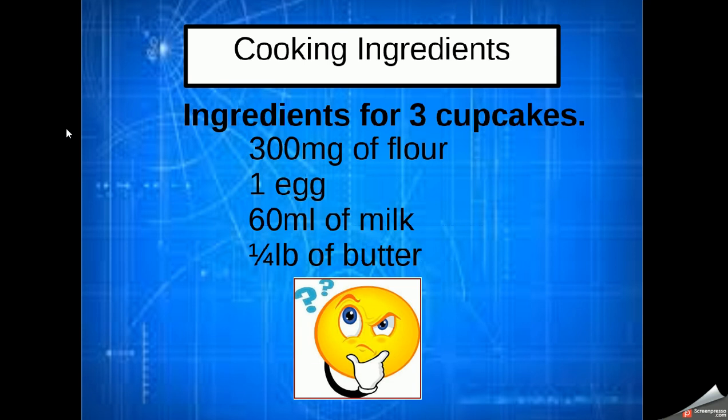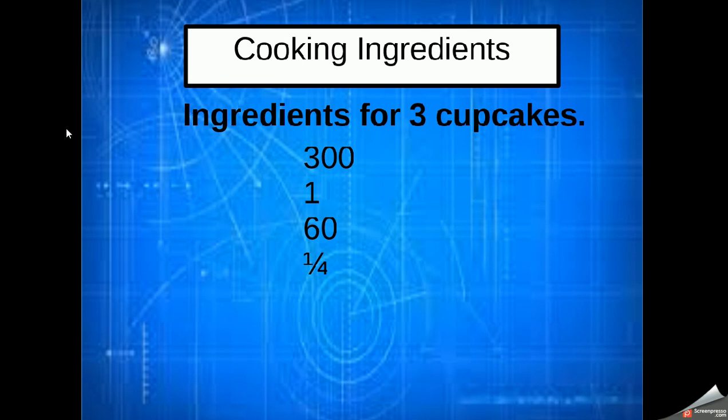We need to get this to be enough for ten rather than for three. So the first thing I'm going to do is forget about the units and then divide each one of those by three. If I'd have had a recipe for five cupcakes I would have divided by five. If it had been for ten cupcakes I would have divided by ten, but the starting point was that I had a recipe for three cupcakes. So by dividing each of these amounts by three, I've now actually got a recipe for one cupcake.